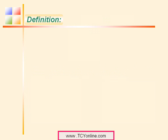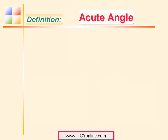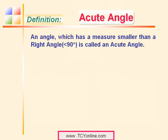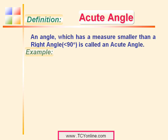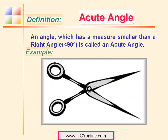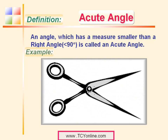Now let's learn about acute angle. An acute angle is an angle which is smaller than a right angle, and it has a measure which is smaller than 90 degrees. For example, look at this scissor — the opening of this scissor is making an acute angle.